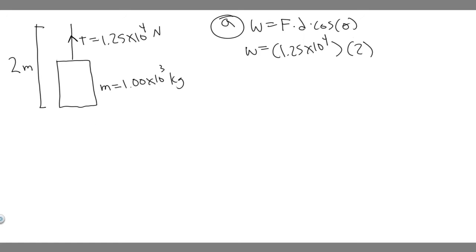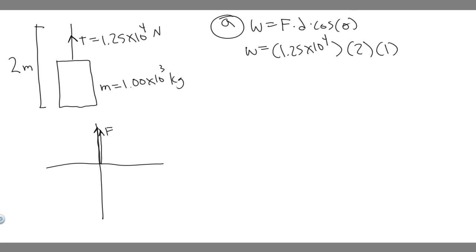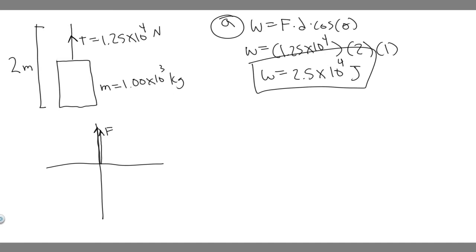Now for the cosine of theta: the tension force is pulling the elevator upward, and the direction it's traveling is also straight upwards. So the force and the direction of travel are basically on top of each other, meaning the angle between them is 0 degrees. Cosine of 0 is just 1, so the work is simply the tension force times the distance: 2 times 1.25 gives 2.5, so the answer to Part A is 2.5 times 10 to the 4th joules.